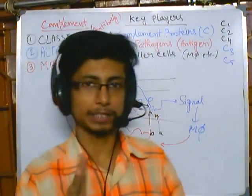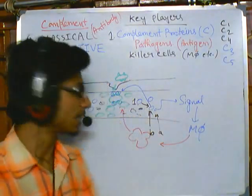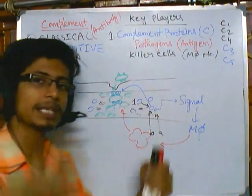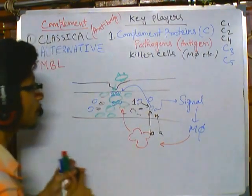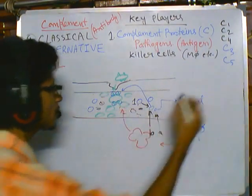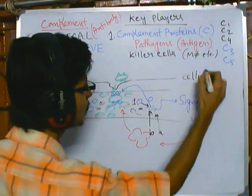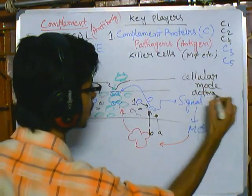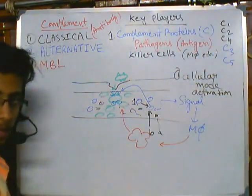Now the complement system can achieve two things. First, it can trigger the cellular response — it can provide the signal to other cells, the engulfing cells like macrophages, to come and kill this. This is called cellular mode activation via this complement system.